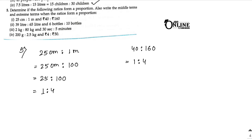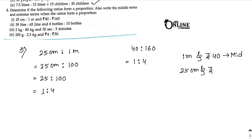Since the four numbers are in proportion, the middle terms are 1 meter and rupees 40, and the extreme terms are 25 cm and rupees 160. Extreme terms are the numbers on the far left and far right. Middle terms are the numbers in between. Written with the proportion sign: 25 cm is to 1 m :: rupees 40 is to rupees 160.